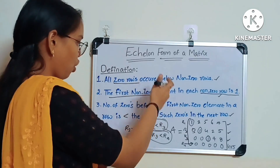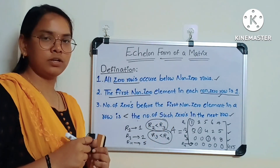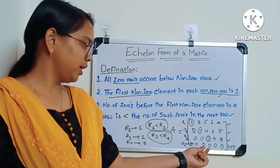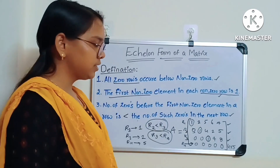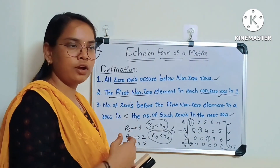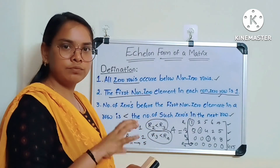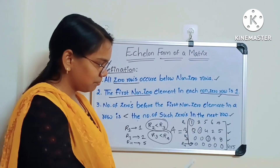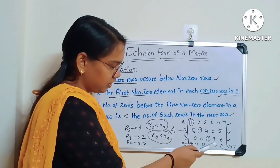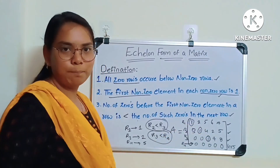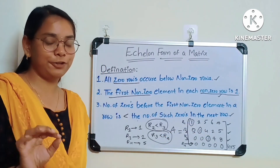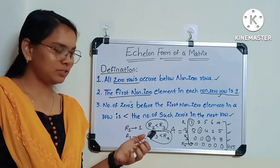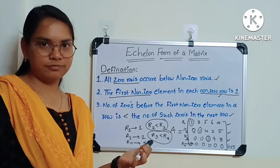Since all three conditions are satisfied, we can say that the given matrix is an echelon form matrix. In simple terms, you can identify an echelon form matrix because it looks like an upper triangular matrix. Just for identification purposes, keep in mind that it resembles an upper triangular matrix — but you cannot call it exactly an upper triangular matrix. This is the definition.